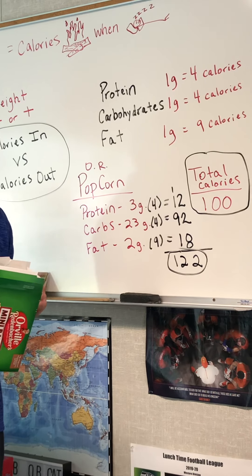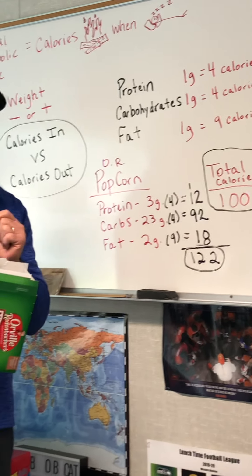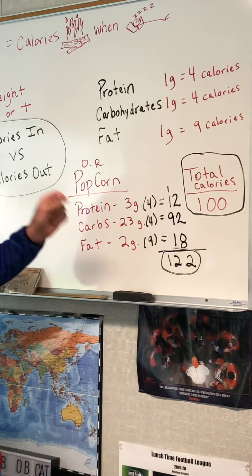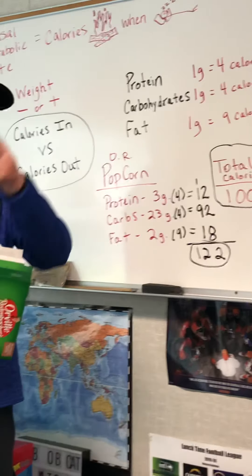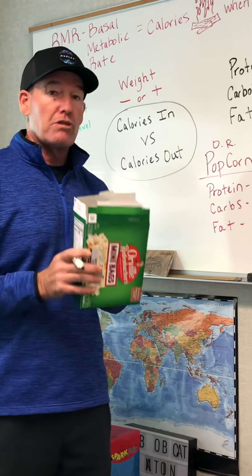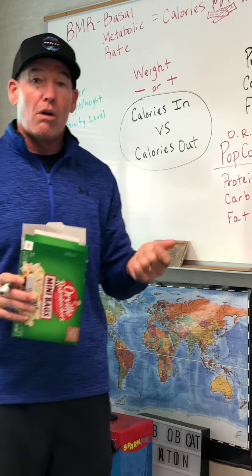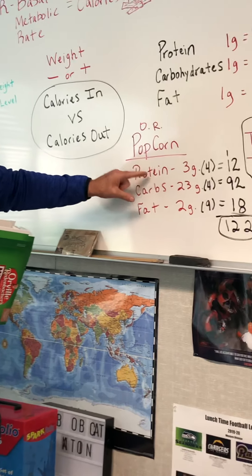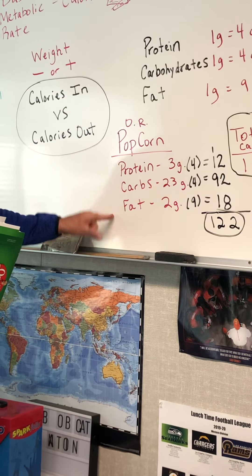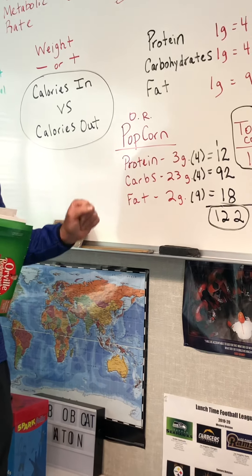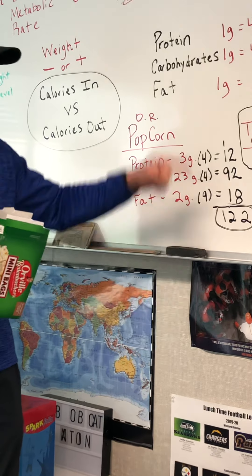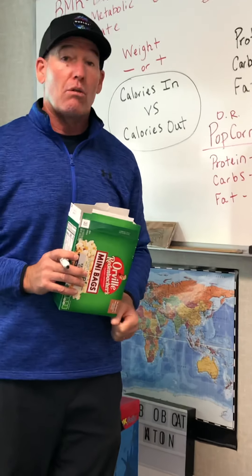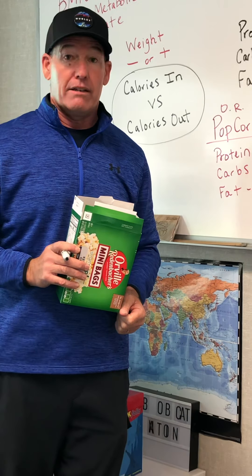You now know how to count how many calories are in every food item that has a nutrition label. I encourage you: go home, pull out a couple of labels, find out the amount of protein, carbs, and fat, multiply the protein and carbs by four and the fat by nine, add it up, and see if it is accurate or if those labels are lying. Have a good day.